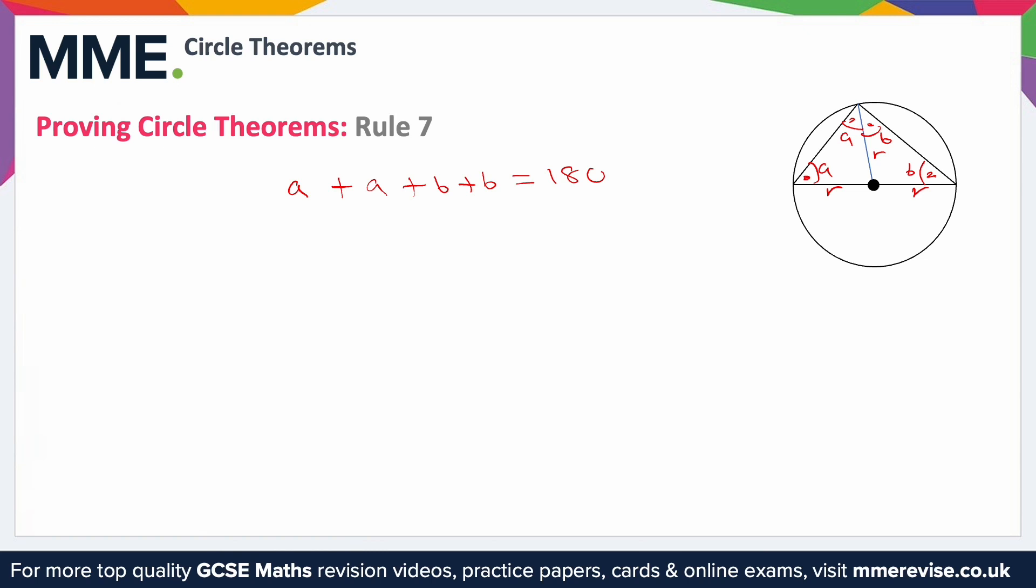So this equals 180. We can simplify this a little bit because we've got two a's on the left hand side and two b's, so 2a plus 2b is 180. And then you'll notice that the angle that we're actually talking about, the angle from here to here, we need to prove that is 90. You'll notice that that angle is a plus b, so if we can figure out the value of a plus b then we can prove that our angle is 90 degrees.